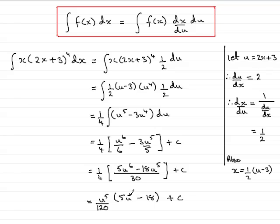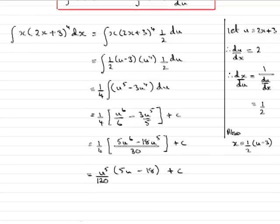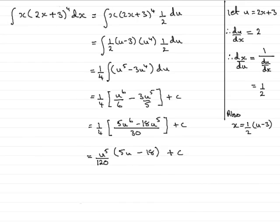Now I'm going to replace my u with the 2x plus 3. So what I have then is 2x plus 3 to the power 5, all over 120. And anticipating at this stage that I'm going to have brackets within brackets, I'm going to put my square bracket back up again. So that's going to be 5 lots of u, which is 2x plus 3, and then minus 18. Close the bracket off. And plus c.